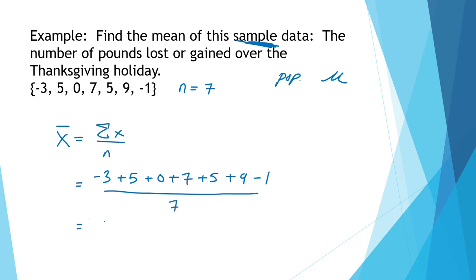The numerator simplifies to twenty-two, and now we have twenty-two divided by seven, and that is equal to twenty-two over seven is approximately three point one four. So we're going to round this to about three point one four.